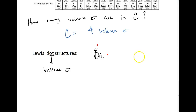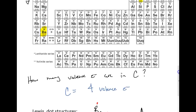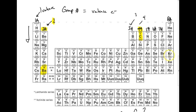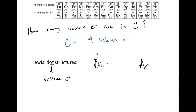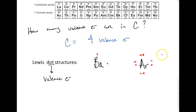Now let's do the Lewis dot structure for argon. Argon is in the noble gas category with 18 total electrons, but it is in column 8A, so it only has eight valence electrons. We draw all eight: starting at 12 o'clock — one, 3 o'clock — two, 6 o'clock — three, 9 o'clock — four. Then we double up the dots: five, six, seven, eight. That is the Lewis dot structure for argon, a noble gas.